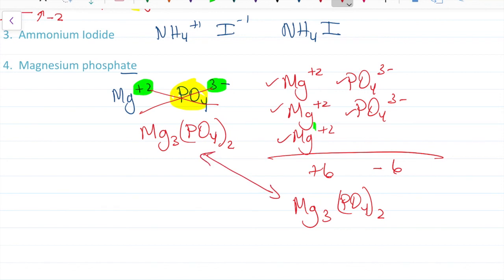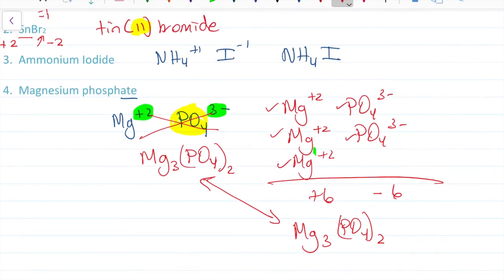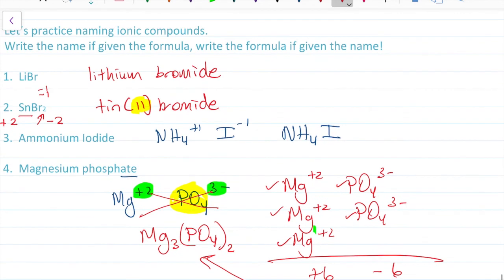If you got all of those, you're doing great. If you missed numbers three and four, rewatch video three. If you missed number two, rewatch video two. If you missed number one, rewatch video one. And that concludes ionic naming.